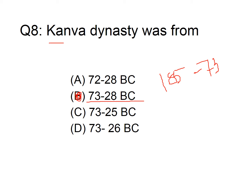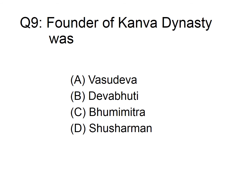After the Sungas, the Kanvas came. The founder of the Kanva dynasty was option A: Vasudeva, B: Devabhuti, C: Bhumimitra, D: Susharman. The answer is option A, Vasudeva. Vasudeva killed the last Sunga king Devabhuti and formed the Kanva dynasty. It was a small dynasty followed by Bhumimitra, Narayan, and Susharman.